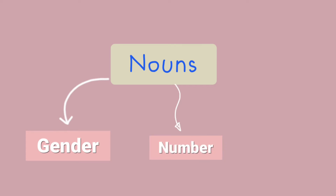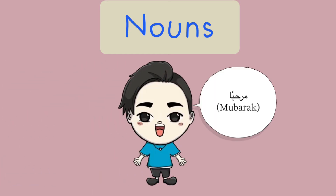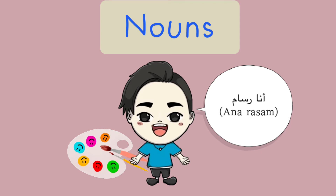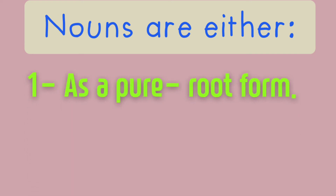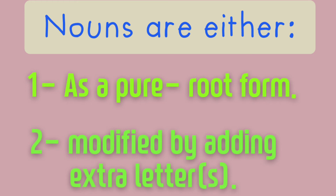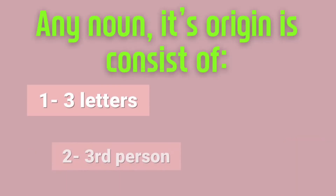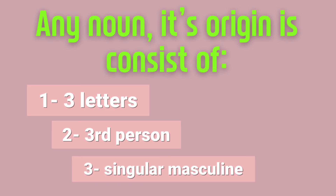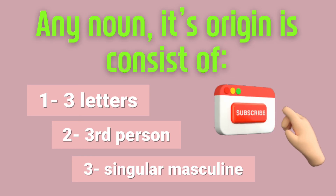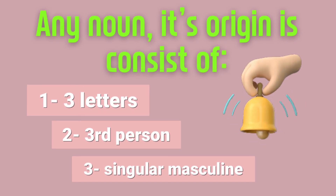Remember: think about the gender, amount, and case whenever you're talking about a noun in Arabic. Let me explain this. Imagine we have a boy and we name him Ahmad — he is an artist. When it comes to Arabic, nouns are either written in their pure root form or modified by adding extra letters. Any word with three letters in the form of the third singular masculine person is said to be a pure root form word. It may not make sense now, but when I give examples you will understand better.